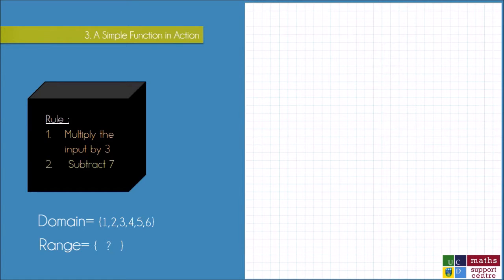And I'm given the domain, it's 1, 2, 3, 4, 5, 6, so these are my input values, because the domain is just the set of inputs.